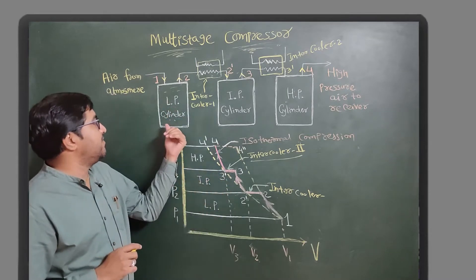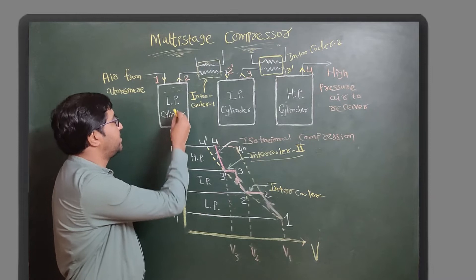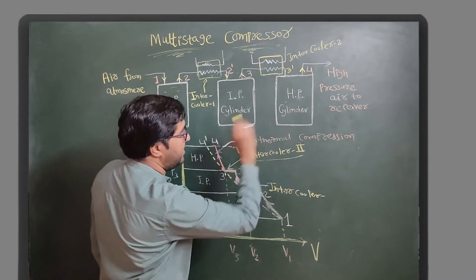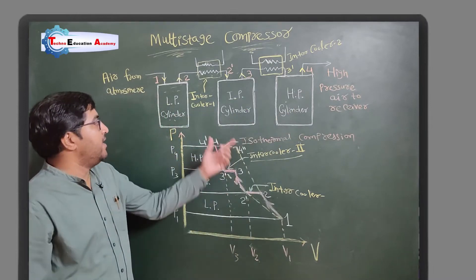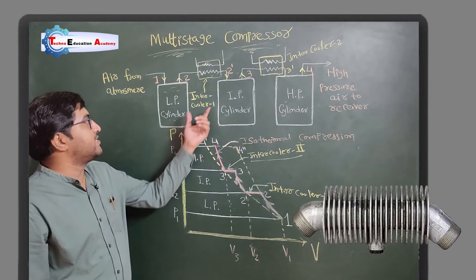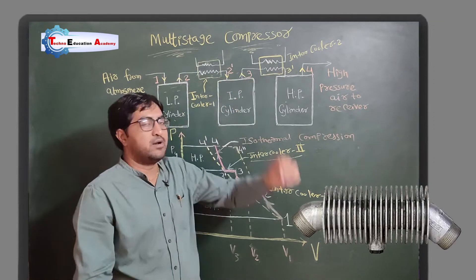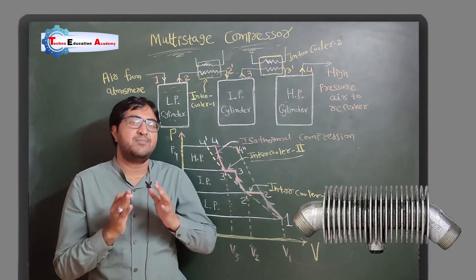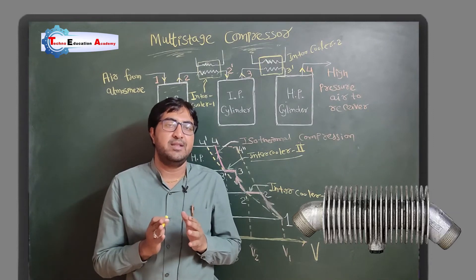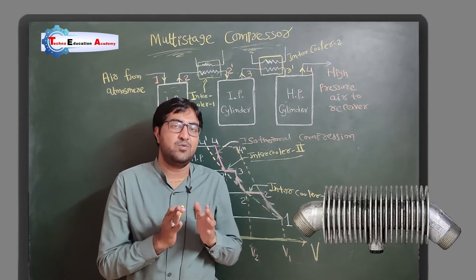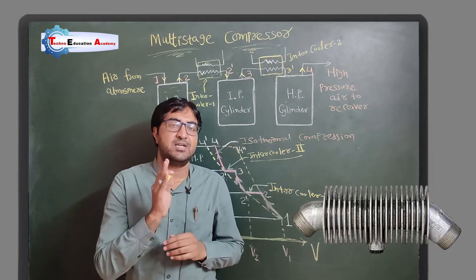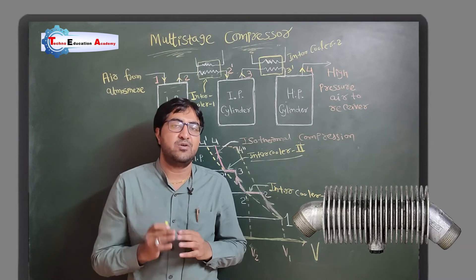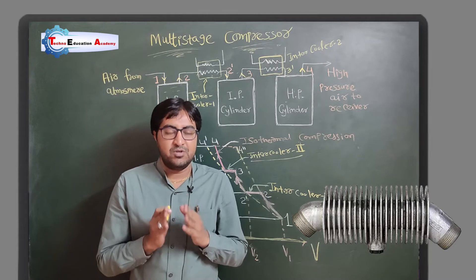Here you can see that we are using three cylinders: a low pressure cylinder, an intermediate pressure cylinder, and a high pressure cylinder. All cylinders are connected with an intercooler. The intercooler is a type of heat exchanger. In this intercooler there is constant pressure cooling theoretically, but practically some pressure drop will be there.